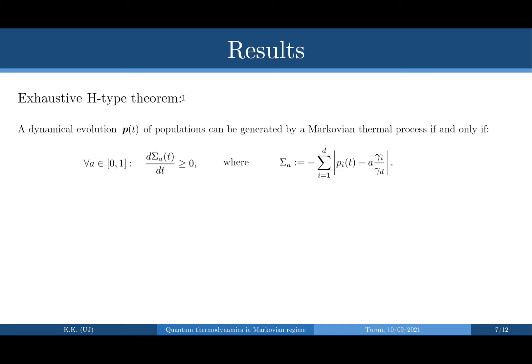The important point is the 'if and only if' — it's not just that those quantities increase, which you could always engineer by writing some monotones, but that if they all increase then you are definitely sure that there exists a Lindbladian that generates the given evolution or state transition.